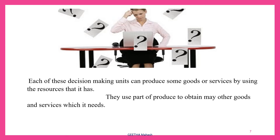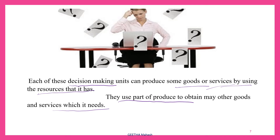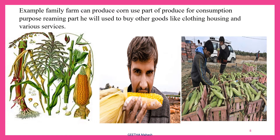All of these are the decision-making units. Each of these decision-making units can produce some goods or services by using the resources that it has. They use the resources and use parts for consumption purposes. The remaining parts they are going to sell in the market using their resources.